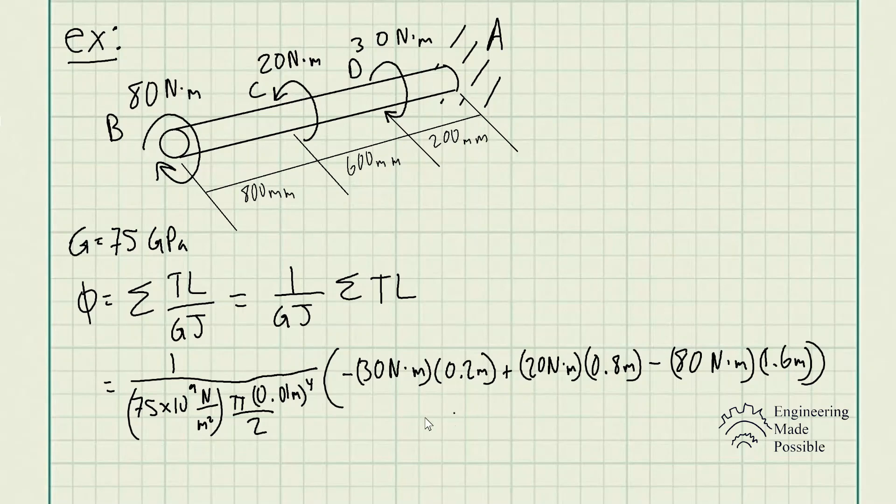So go ahead and do the calculations. It gives us the angle of twist is negative 0.1002 radians. And of course, you could always convert the radians into degrees by doing the factor of π over 180. Or in this case, 180 divided by π, which gives us negative 5.74 degrees.